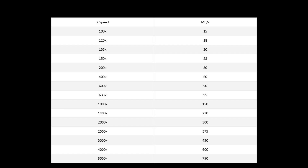Friends, if you check the memory card, there is a digit with an X. This represents the card's speed. For example, 100X means 15 Mbps, 120X means 18 Mbps, and 5000X means 750 Mbps.